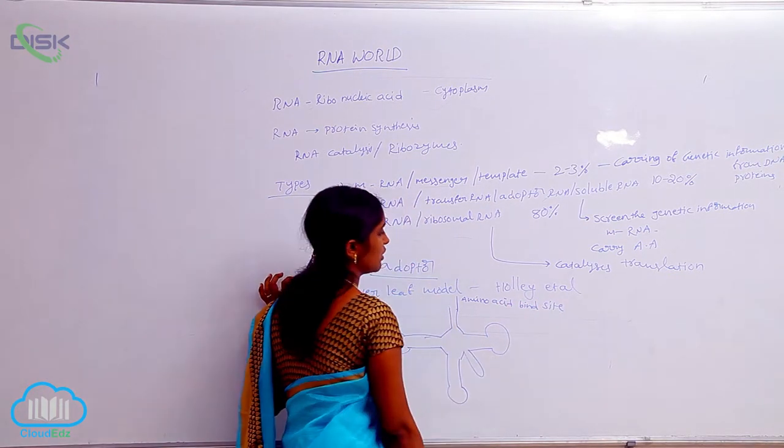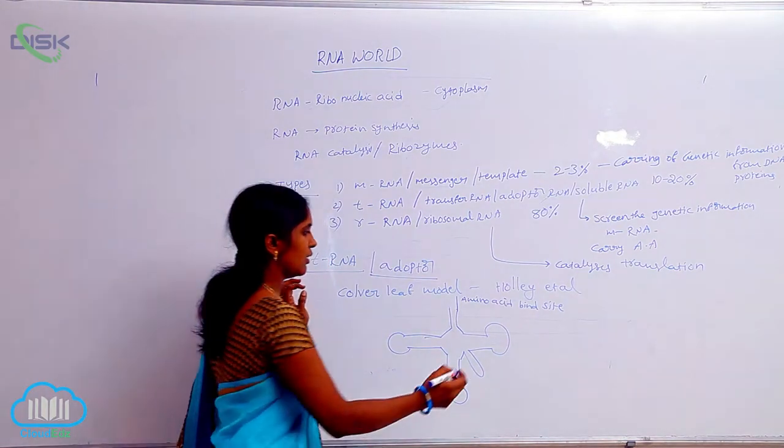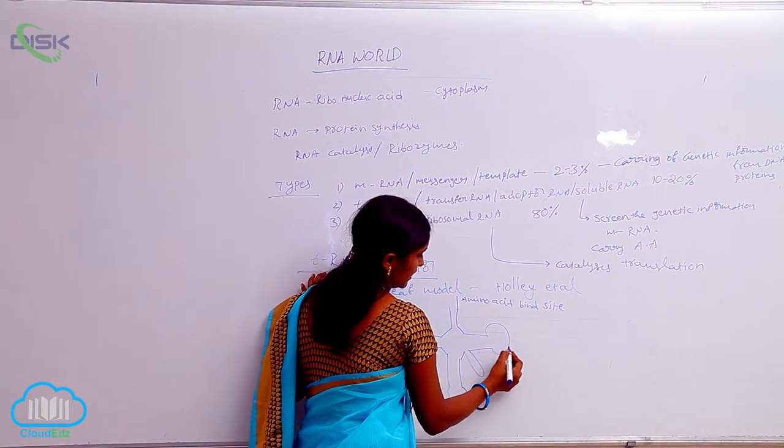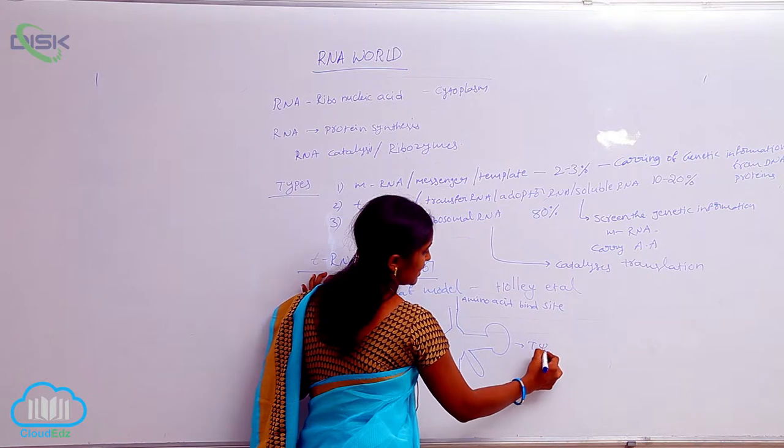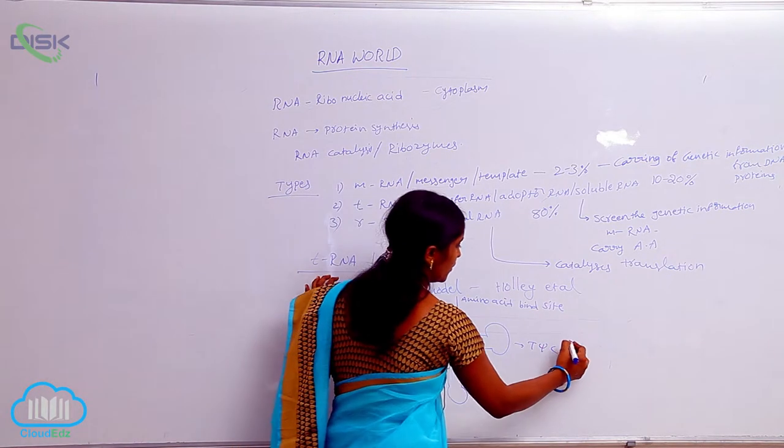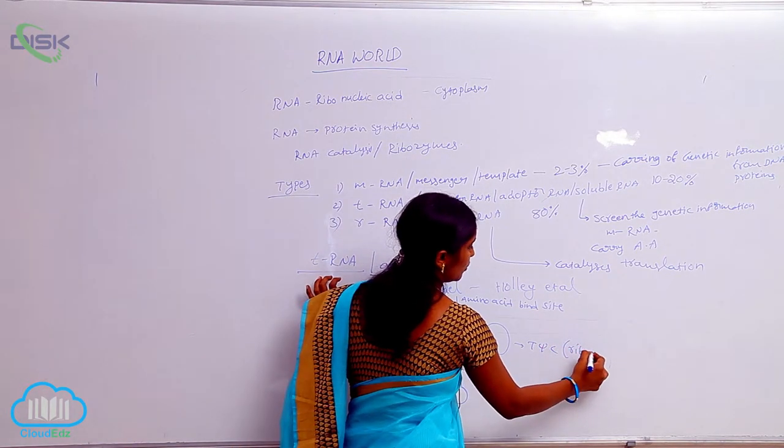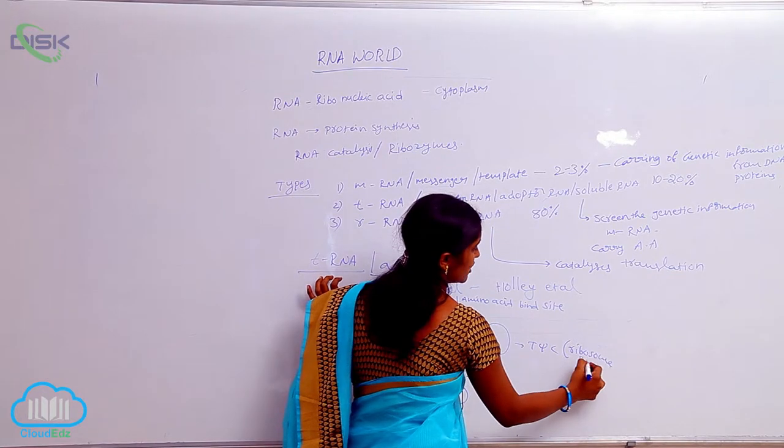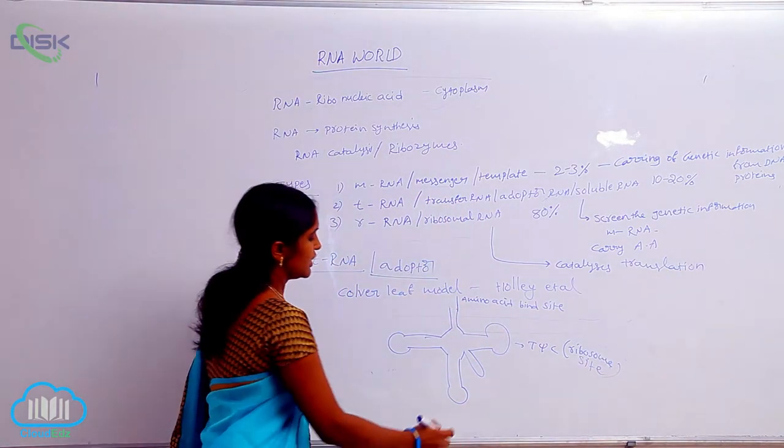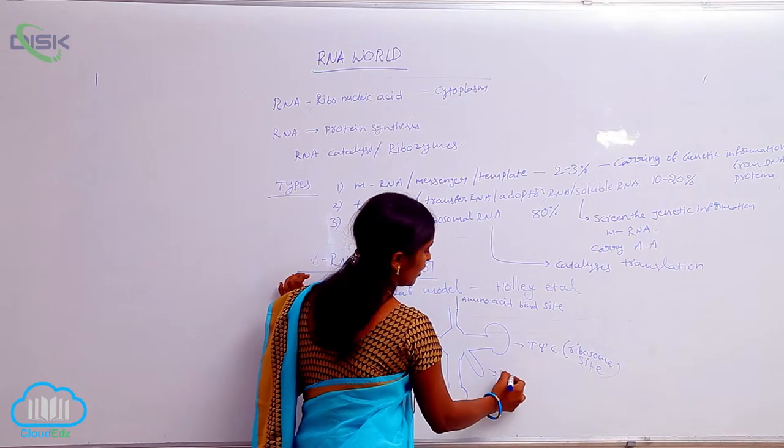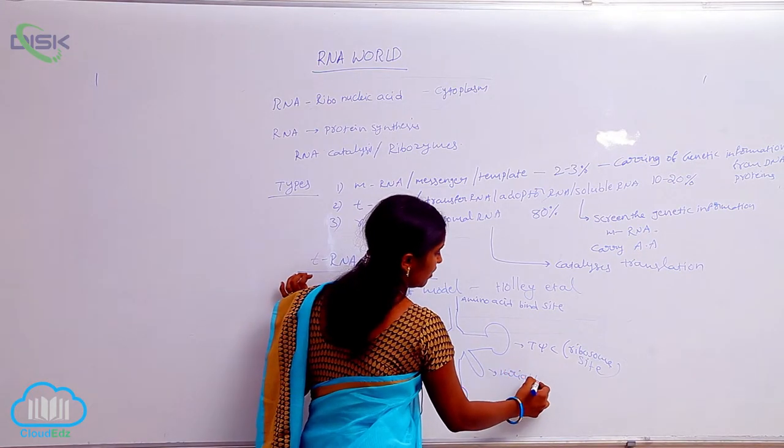This is the T-psi-C arm. It is useful for ribosome binding site. It is also called the ribosome binding site. This is the variable arm.